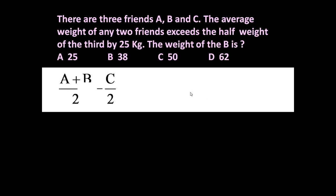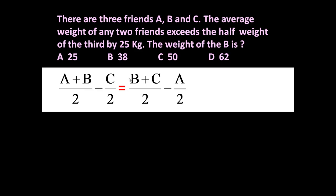To answer this question, let us see what it is saying. The average weight of any two friends — let us say A and B — their average is (A + B) / 2, which exceeds the half weight of the third by 25 kg. This is one combination, but he is saying 'any two friends', so this may change also.